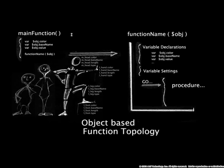In an object-based function topology, you basically turn a traditional function into an object. So functions are now being passed objects, and you can add new properties to your objects throughout the development of your rigging tools.